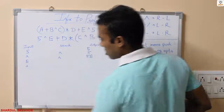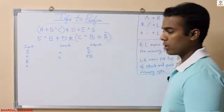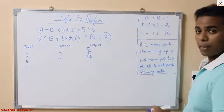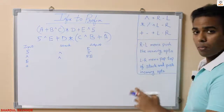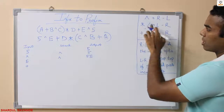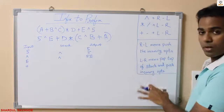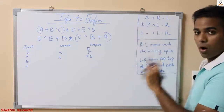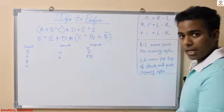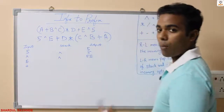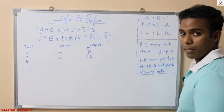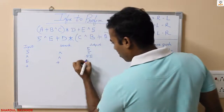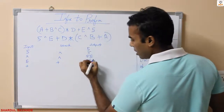Next I have plus. Plus is an operator, so I will compare it with the top element of the stack. In the precedence table, power has the highest priority, then star/division, then plus/minus. So top element of the stack — power — is greater than the incoming operator plus. So we will simply pop out the top element of the stack and push the incoming operator. Output will have 5, E, and power.